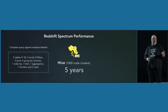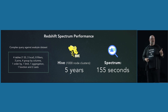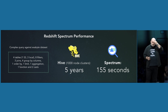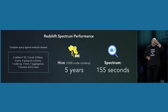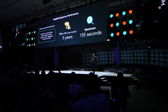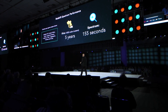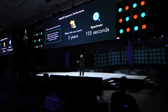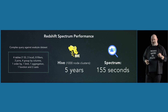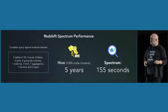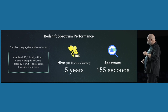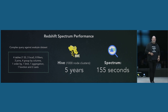Spectrum, however, takes a hundred and fifty-five seconds to run this complex query on an exabyte of data. And it will cost you a few hundred dollars to do this — on an exabyte of data. This really allows you to build your data lake inside Amazon S3 and run extremely complex data warehouse queries directly on top of it.